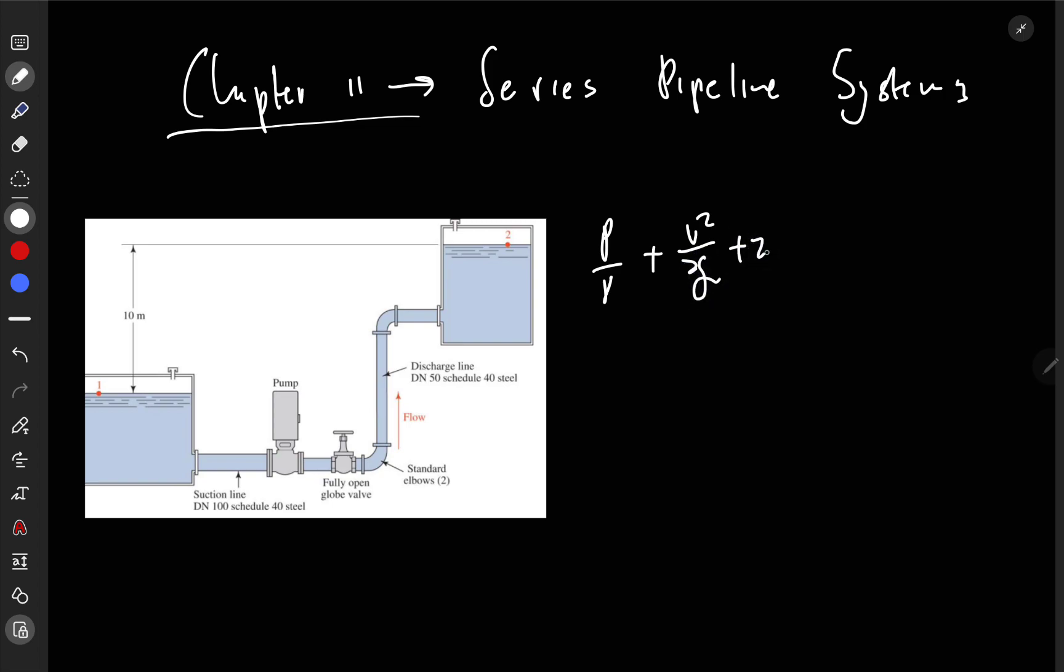We know that P over gamma equals V squared over 2g plus Z plus energy added plus energy loss. This equals P over gamma plus V squared over 2g plus Z. This is our energy equation. Of course this thing is open on both sides, so these terms will go to zero. These things are of the same dimensions so this one will go to zero, this one will go to zero.